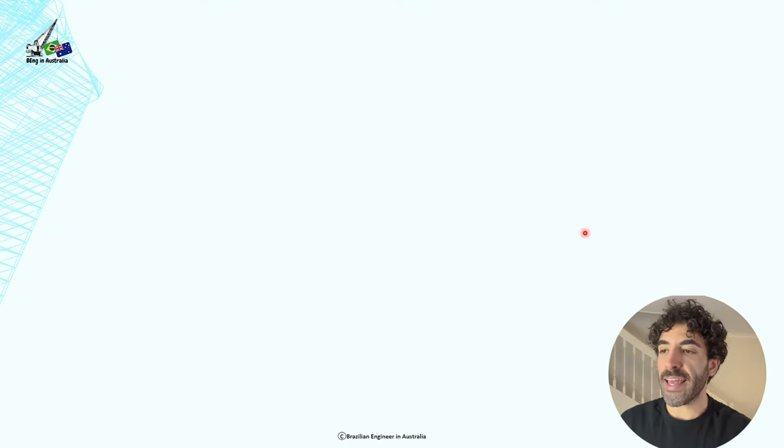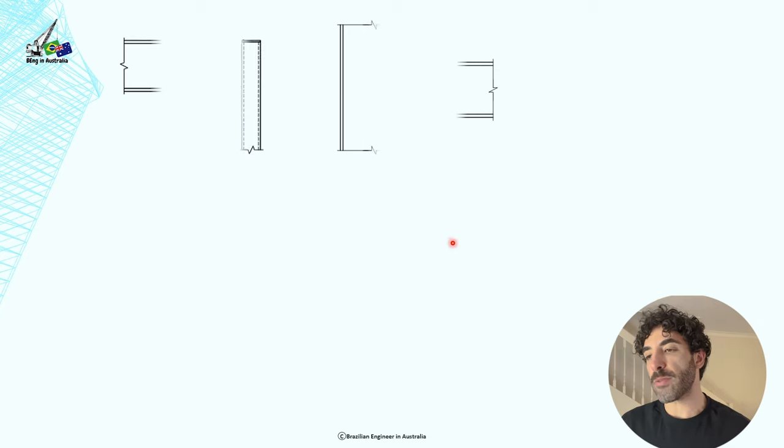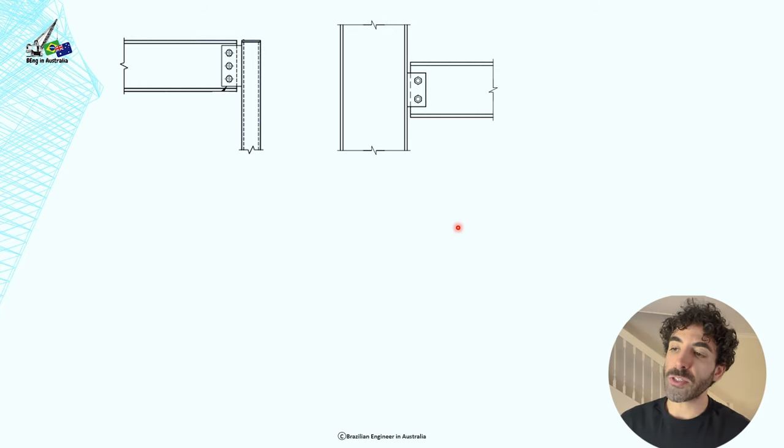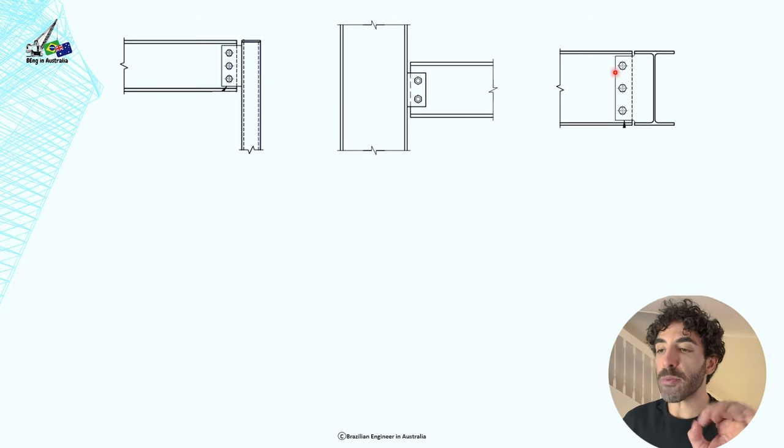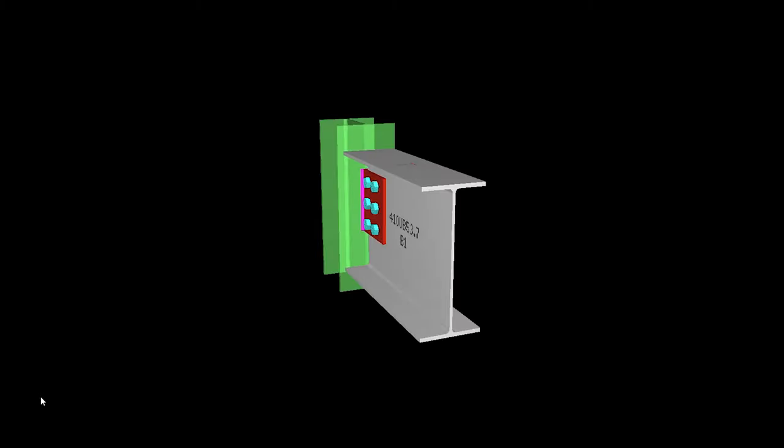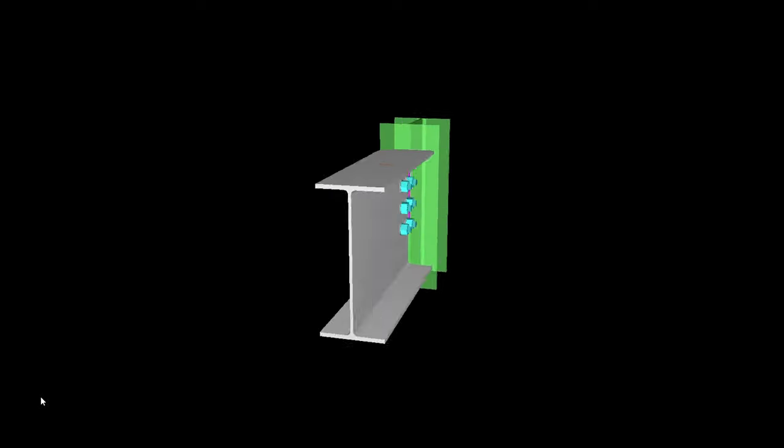Let's start with an easy one, a side plate shear connection. So this is by far the most common connection used in the construction industry. And the reason being is that it's cheap and easy to fabricate and construct. So you can use it to connect a beam to a column or a beam to a beam. And it's simply a plate welded to a supporting member and bolted to a supported member.